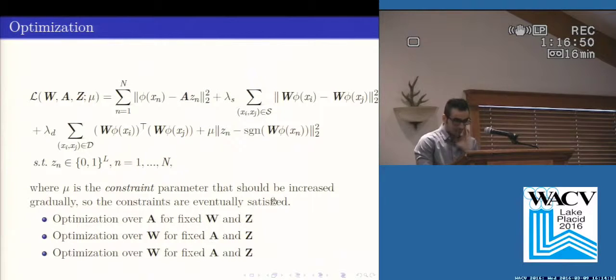For optimizing, we use the penalty algorithm and relax the constraint and add it to the objective function, where mu is the constraint parameter that should be increased gradually so the constraints are satisfied. For optimizing this function, we use a coordinate descent algorithm.